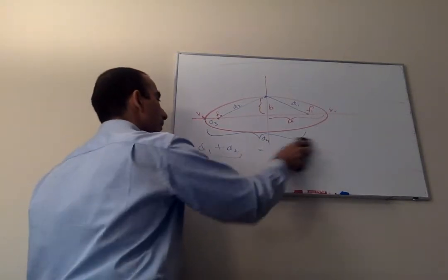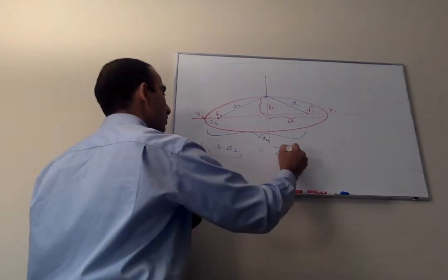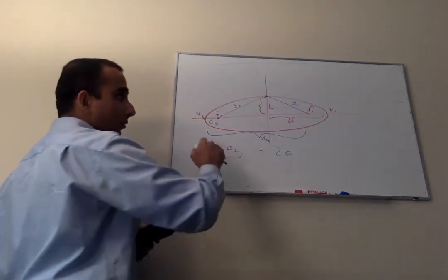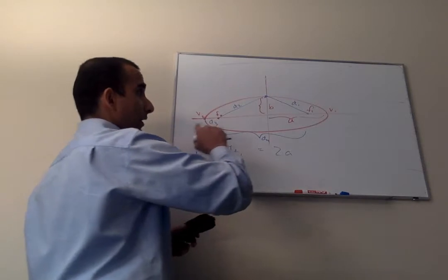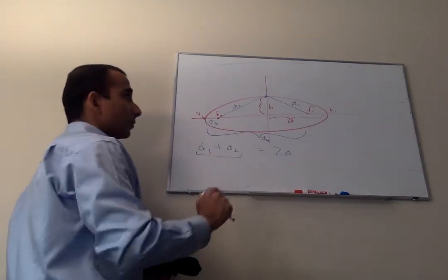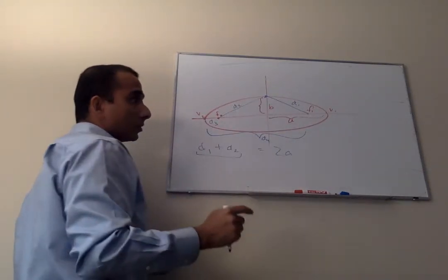Now, let's look at that one more time. So D1 plus D2 is equal to 2A, A plus A.